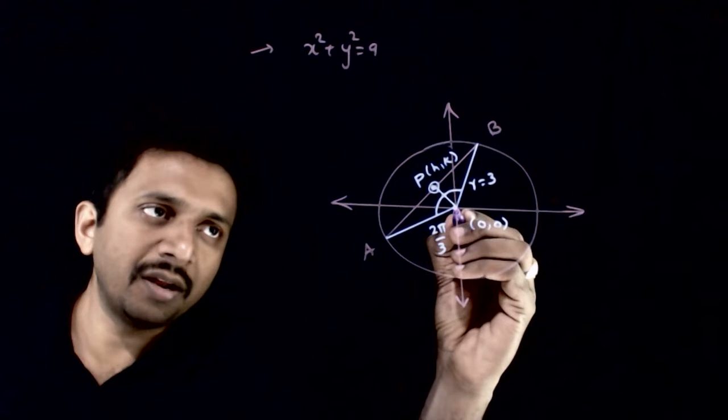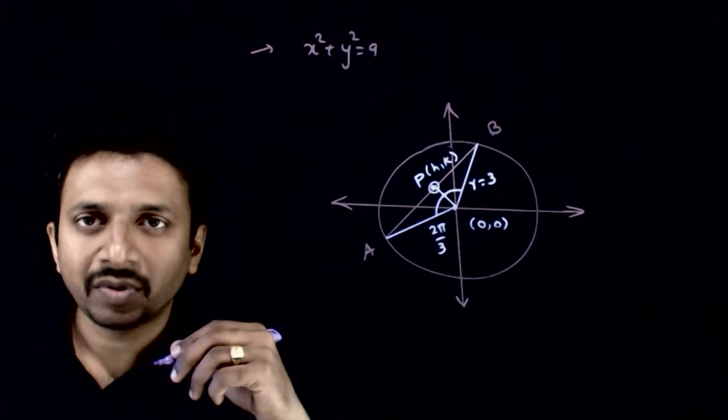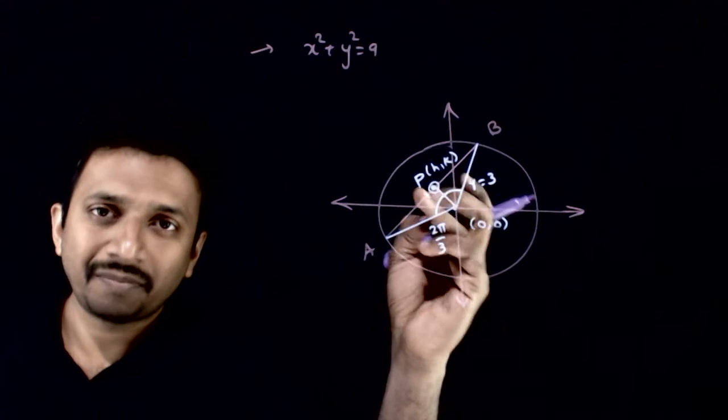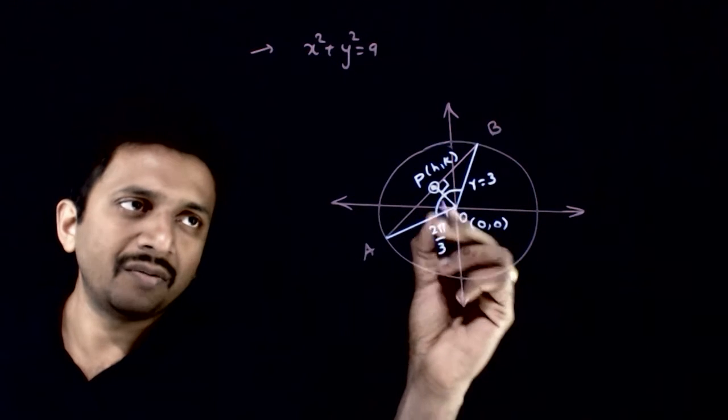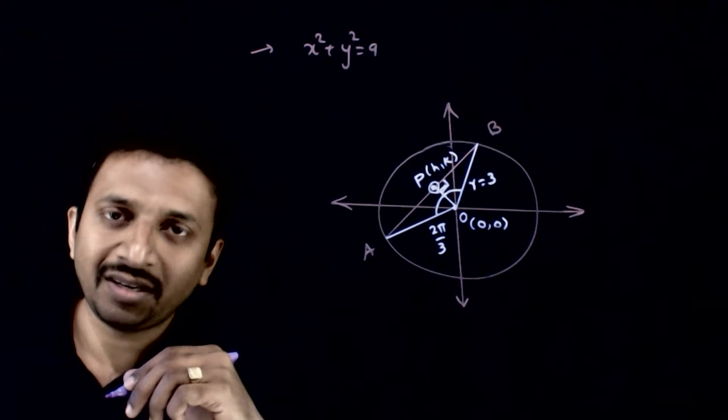Now if you draw a perpendicular from the center onto this chord, we know that if I bisect this chord, it will be perpendicular. So if I join origin with P, this angle will be 90 degrees.